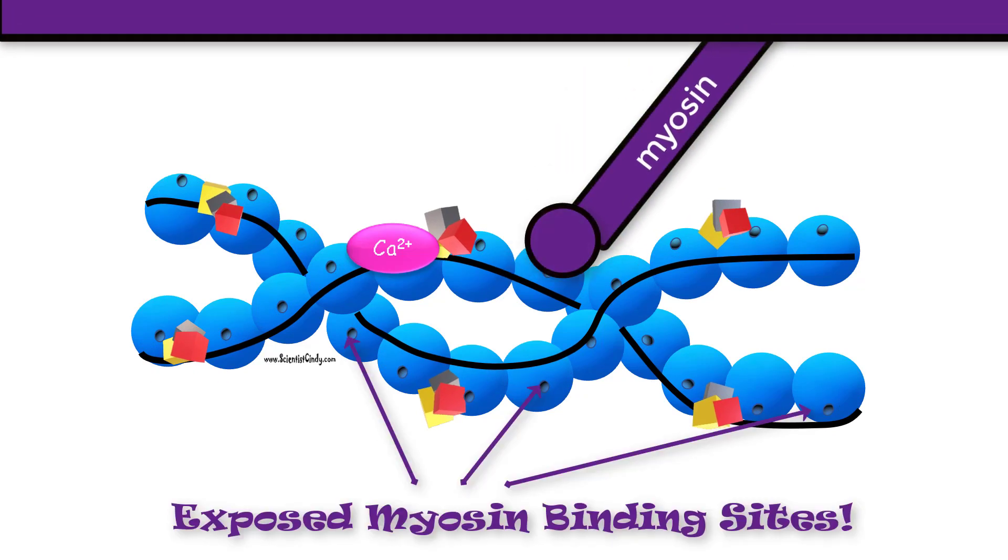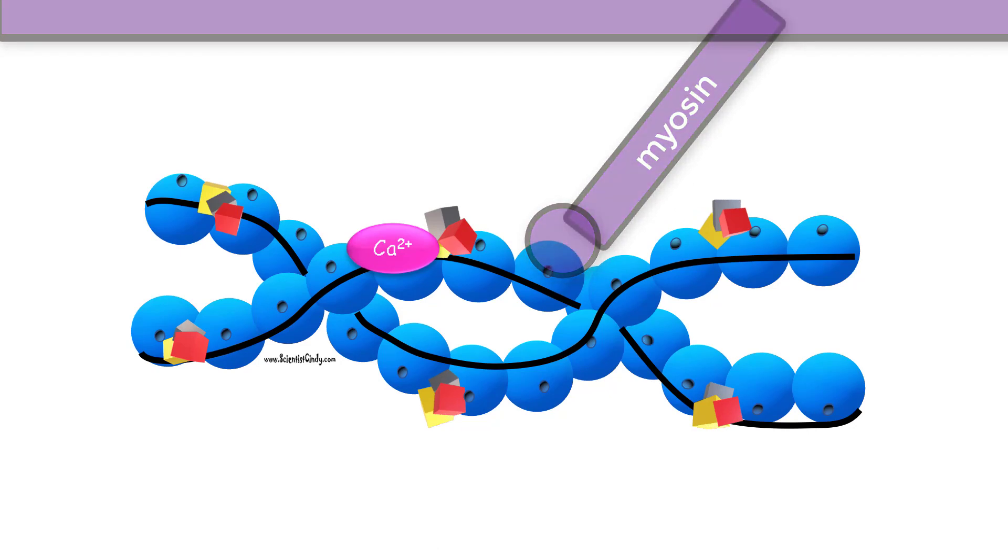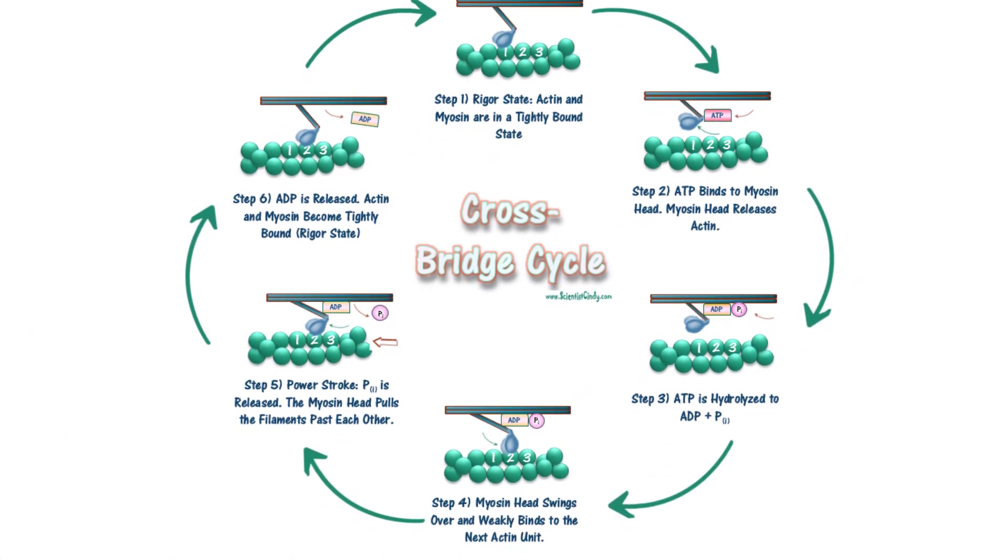Now that the myosin binding site is available for binding, the crossbridge cycle can begin.